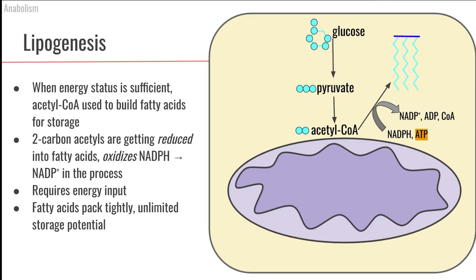And that brings us to lipogenesis, where we can build fatty acids and ultimately store lots of energy in the form of triglycerides. So lipogenesis — this metabolic pathway is anabolic because we're building something. Genesis means we're building something. What? We're building lipids.